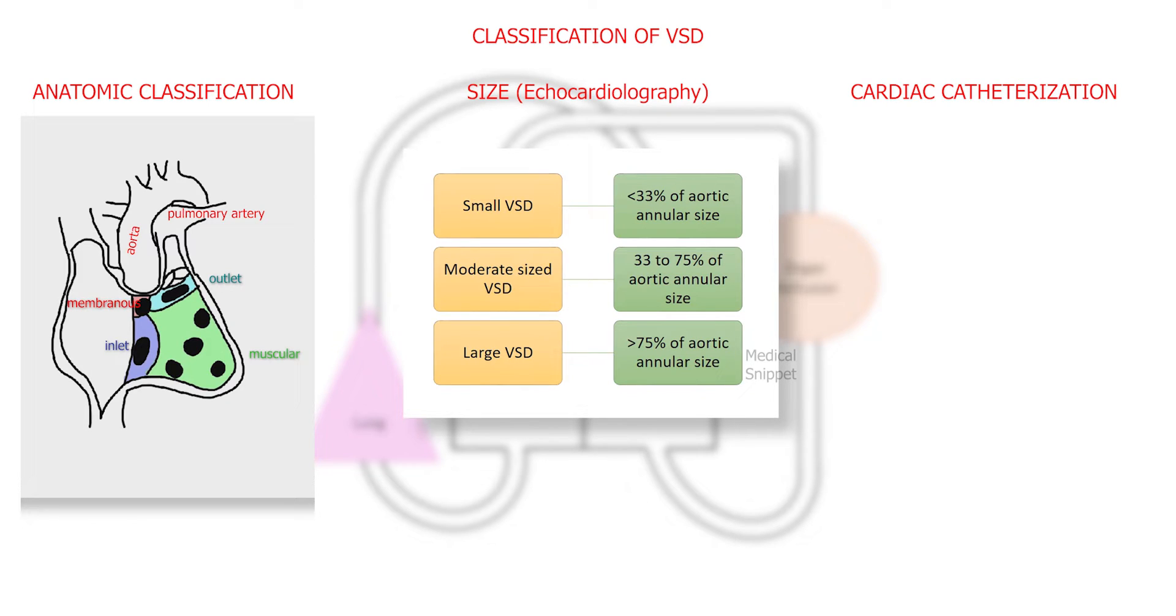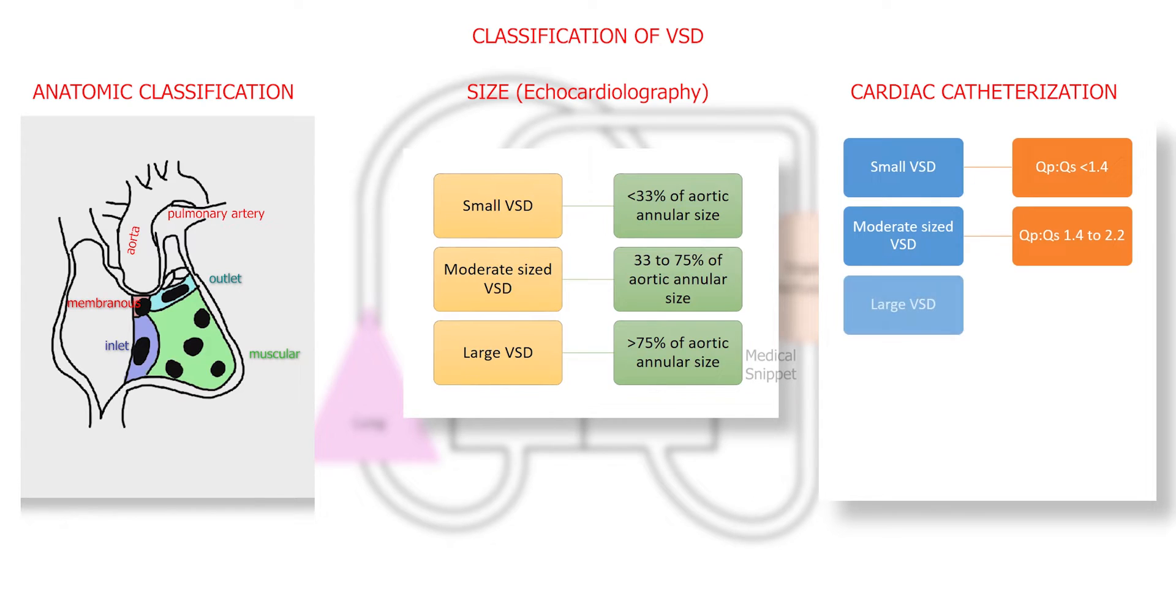The third classification is according to the CAF study. A small VSD has a QPQS ratio less than 1.4. A moderate-sized VSD has a QPQS ratio between 1.4 to 2.2. A large VSD has a QPQS ratio more than 2.2.